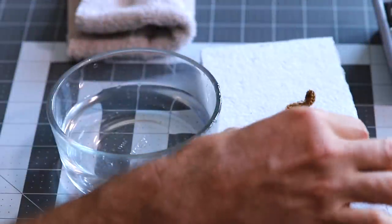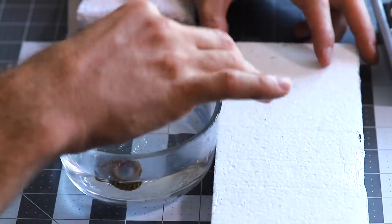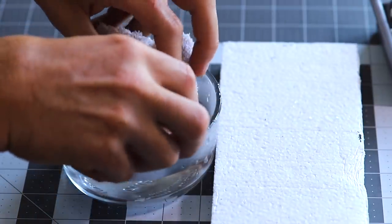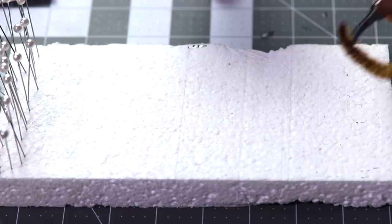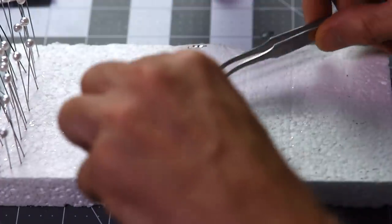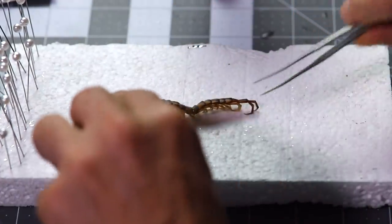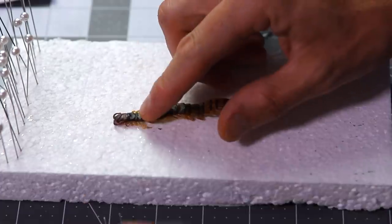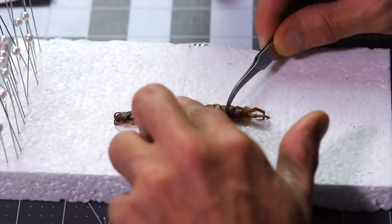Now it's time to hydrate and pose these two centipede specimens. First I soak them in water for about 6 hours which makes them pliable enough to pose and pin. This guy has about 50 legs and each one has to be posed individually and pinned in place.